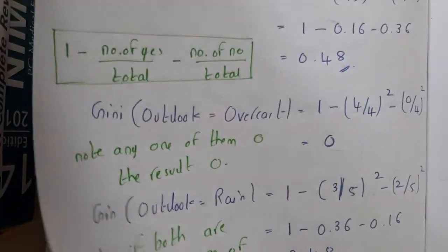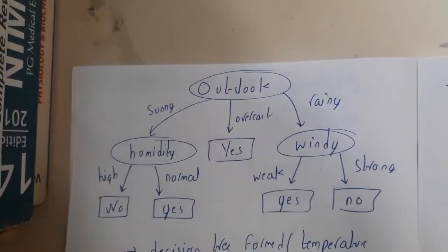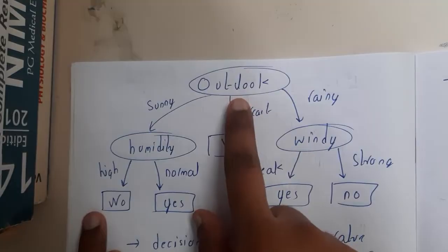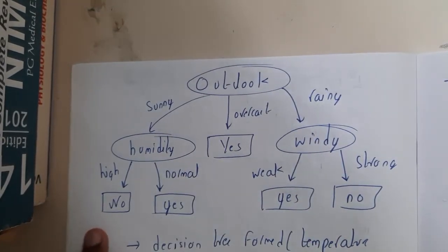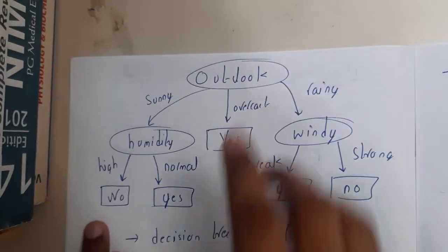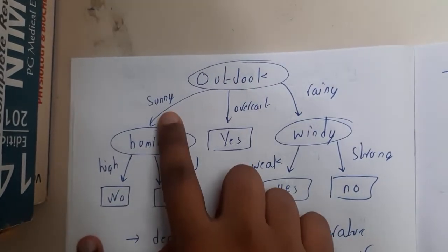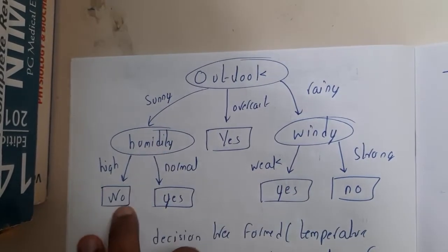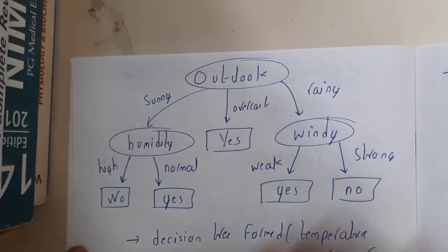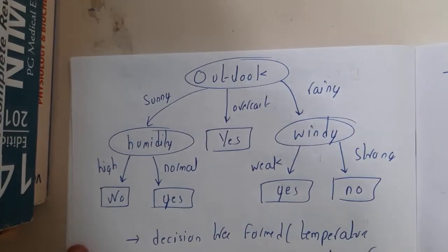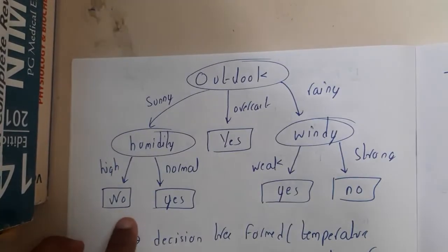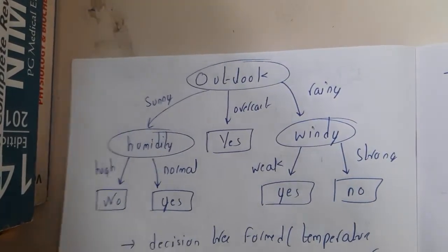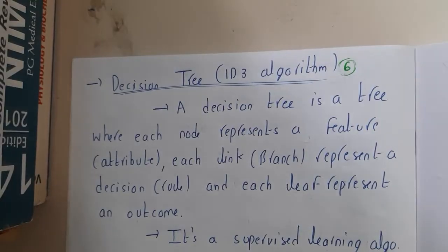If you want to see the final diagram, it will look like this. Based on temperature, humidity, and wind, I can say whether you are interested in going or not. For example, if the outside outlook is sunny and the humidity is also high, there is a high chance you are not going. The tree might look easy and the formulas might seem simple, but it's a time-consuming process — that's the only thing I am saying.